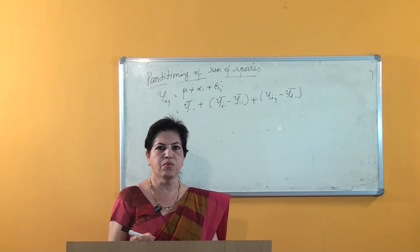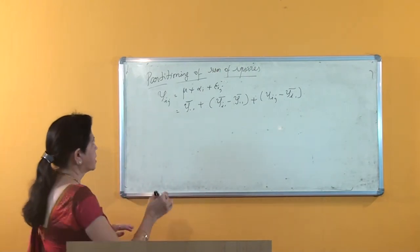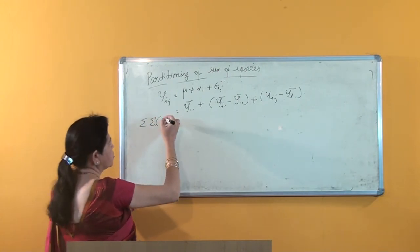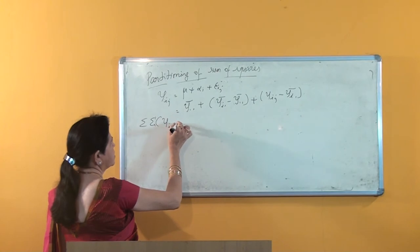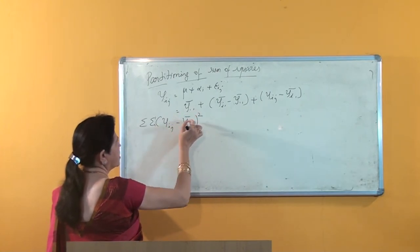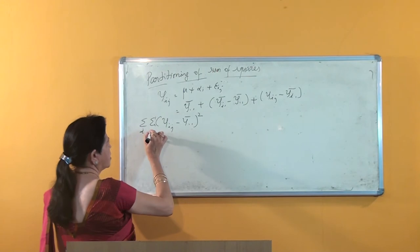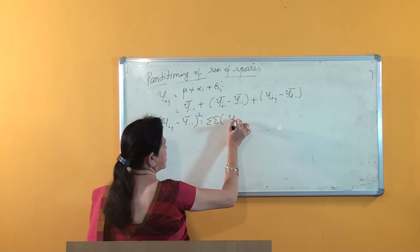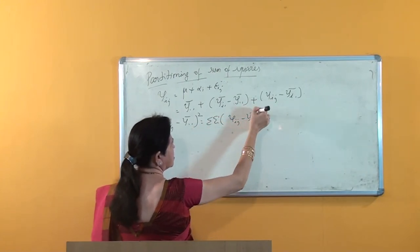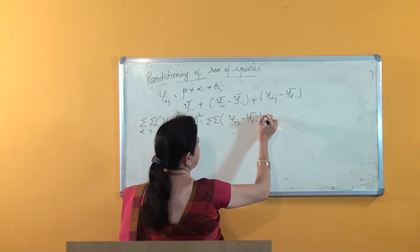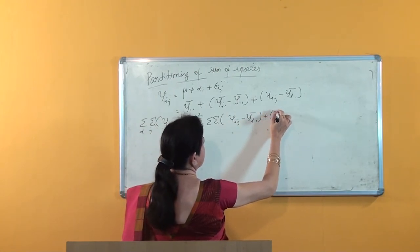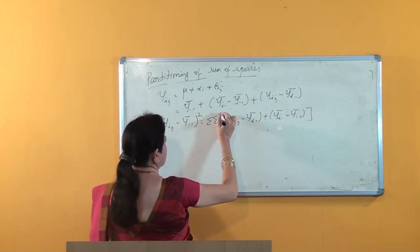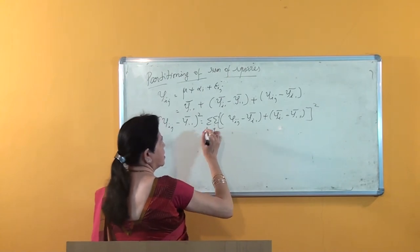Now, partitioning the sum of squares. This is done by shifting y double-dot bar to the left-hand side, giving y_ij minus y double-dot bar, then squaring it and taking summation over i and j. This becomes the double summation of (y_ij minus y_i-dot bar) plus (y_i-dot bar minus y double-dot bar), whole squared, summed over i and j.